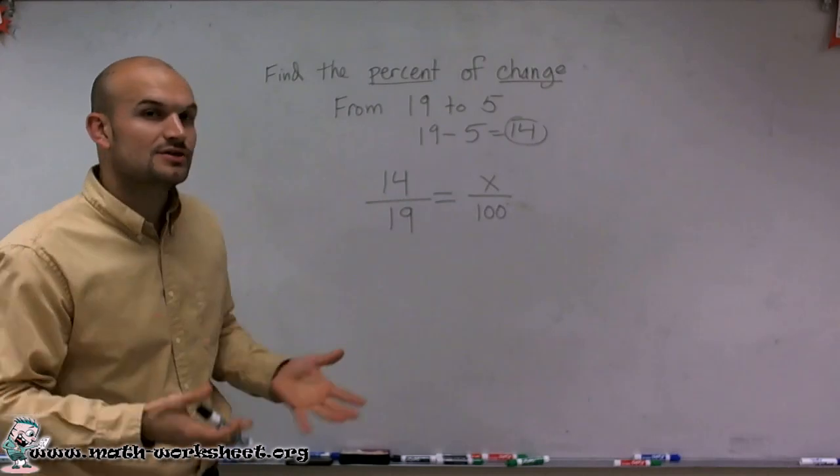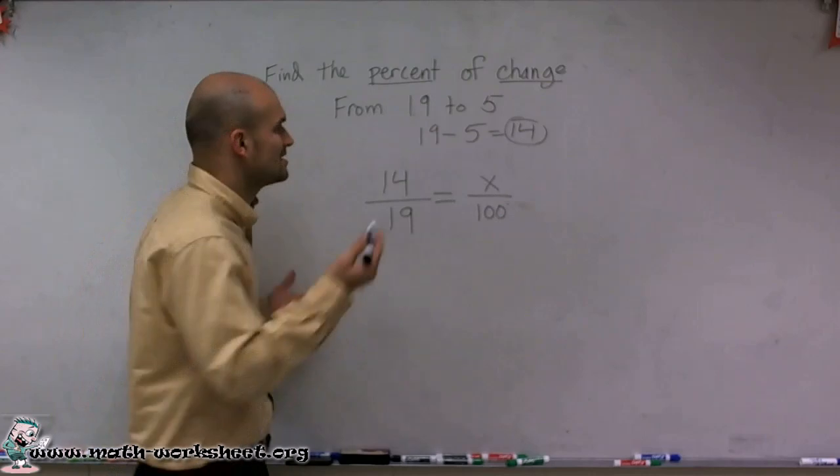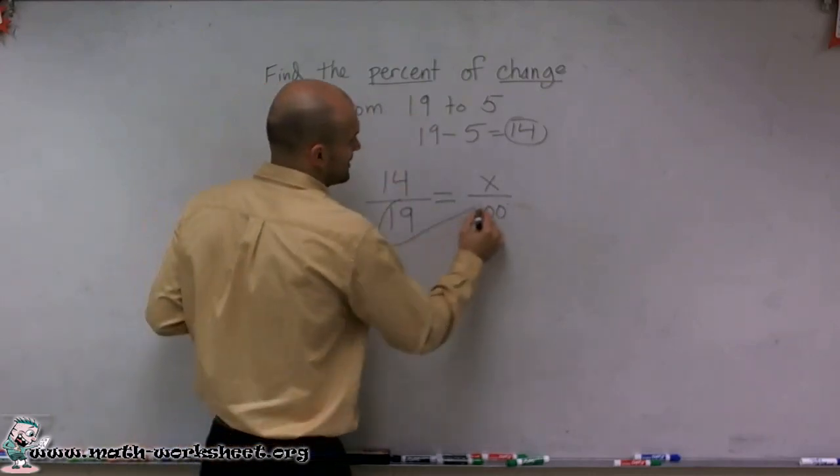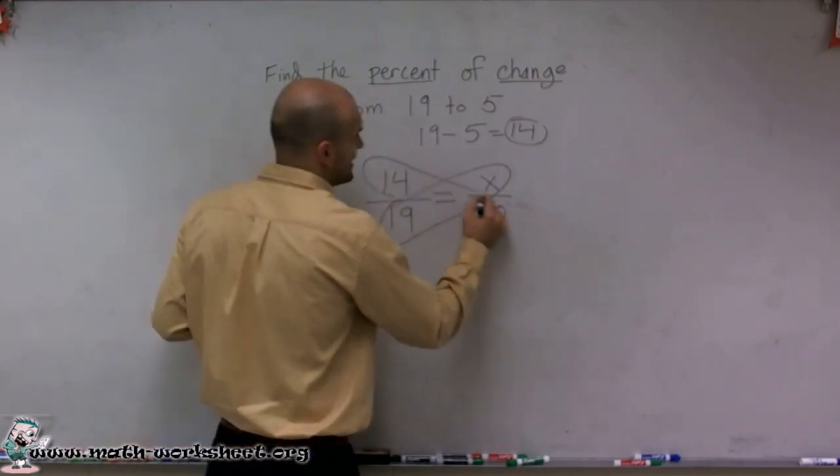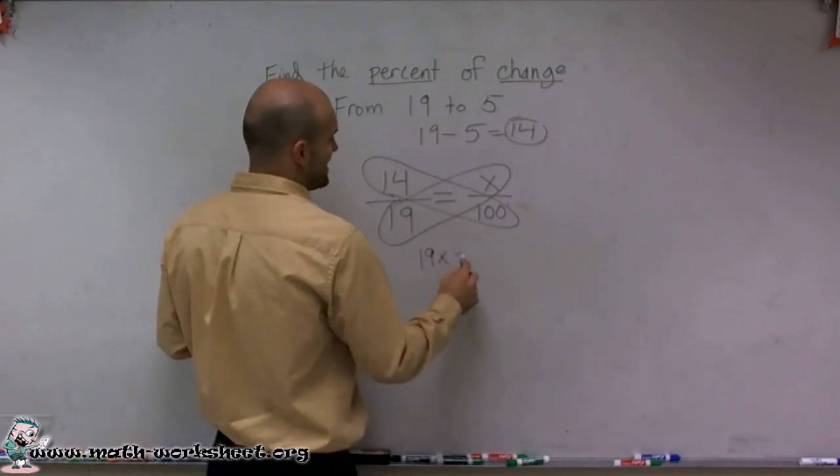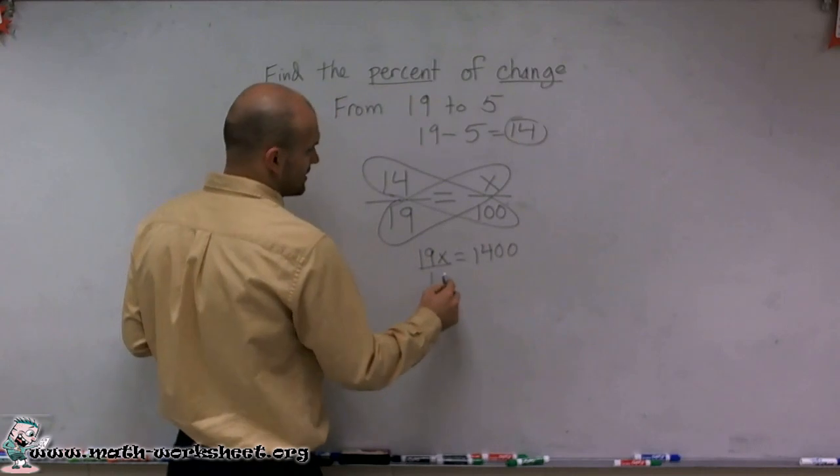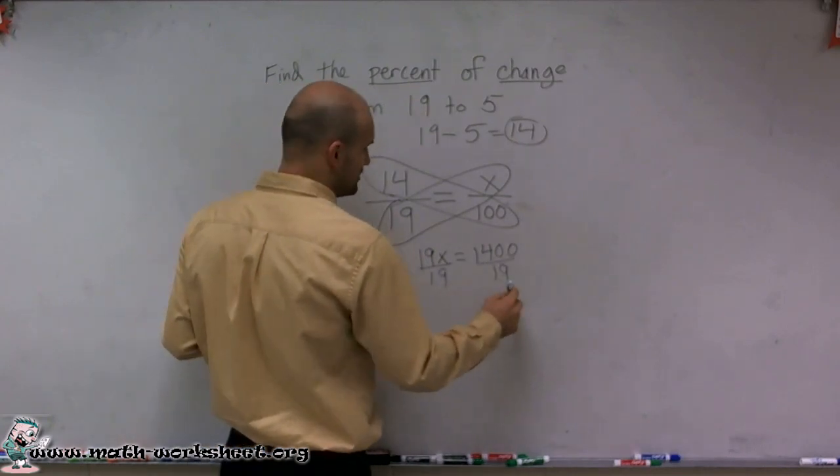So now what we're going to do, a lot of times when I teach students how to solve equations, I like to show them the inverse operations. Since we're just talking about percents, we're going to kind of make this quick. What we're going to do is use cross multiplication. So therefore, I'm going to have 19x equals 1,400. Divide by 19 on both sides.